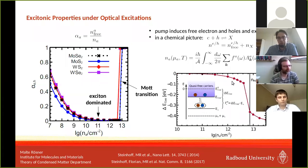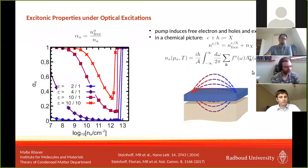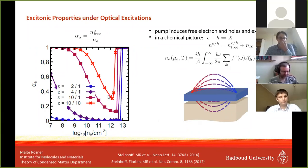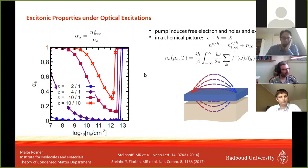This is also visible in the band gap: around the optical Mott transition, there is a strong change in the band gap. This can also be strongly affected by the surrounding material — introducing substrate screening with epsilon_substrate = 2, 4, or 10 strongly decreases the number of excitons, simply due to decreasing the Coulomb interaction, thereby decreasing the excitonic binding energy and making free carriers more likely to remain free. However, we still see this kind of Mott transition even when the material is fully sandwiched.